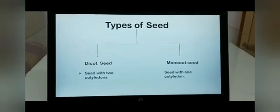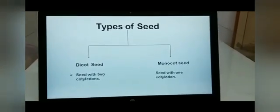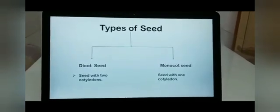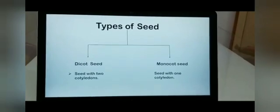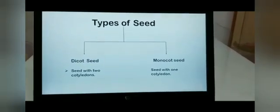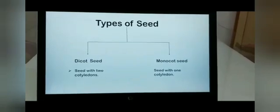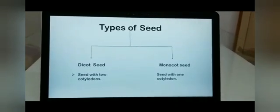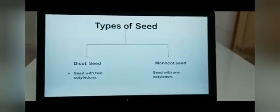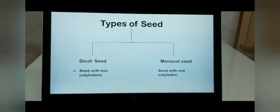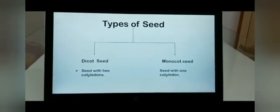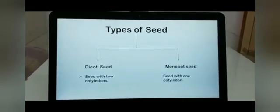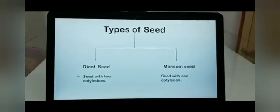Now let's study the types of seed: a dicot seed and a monocot seed. Based on the number of cotyledons, seeds are divided into these two types. Dicot — 'di' means two, 'cot' means cotyledon — a seed having two cotyledons is called a dicot seed. Monocot — 'mono' means one or single, 'cot' means cotyledon — a seed having one cotyledon is called a monocot seed.